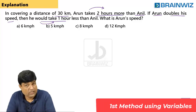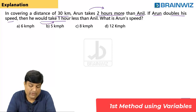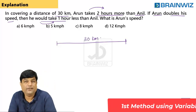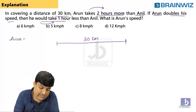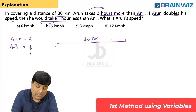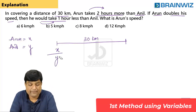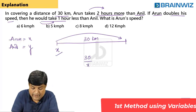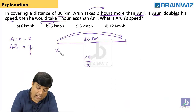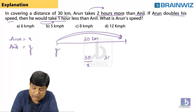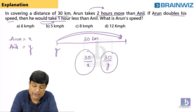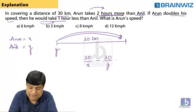This can be done in a long approach. Let me teach you that approach which you can find in R.S. Agarwal. Imagine the total distance Arun and Anil have to travel is 30 km. Let Arun's speed be x and Anil's speed be y. If Arun is traveling at speed x, the time taken by Arun is 30 divided by x. And for the same distance, if Anil goes at speed y, the time taken is 30 divided by y. The gap between them is 2 hours more.